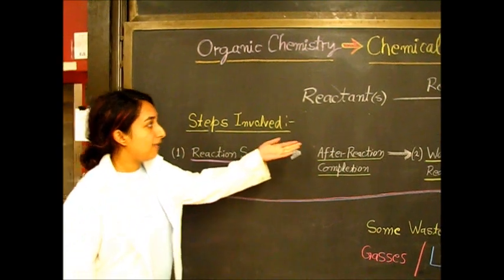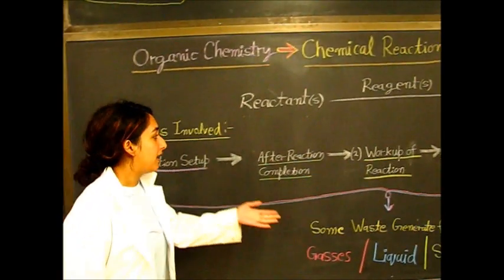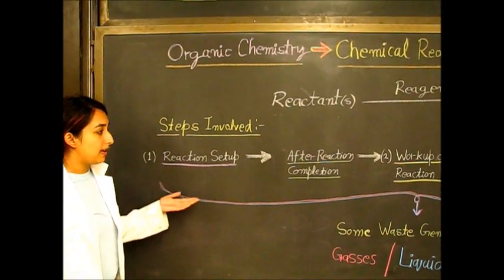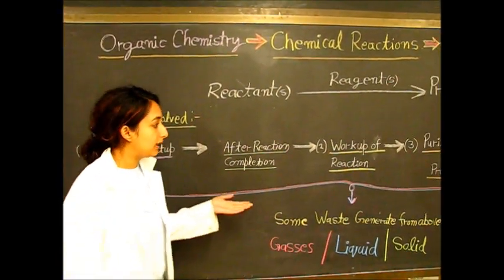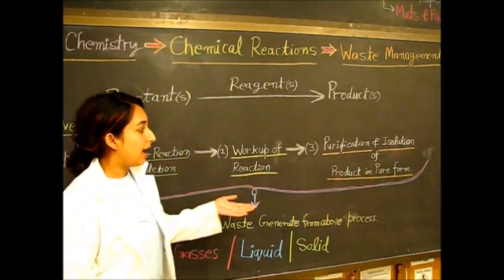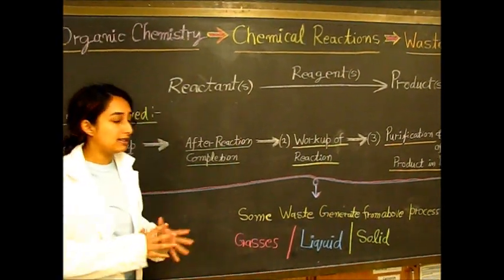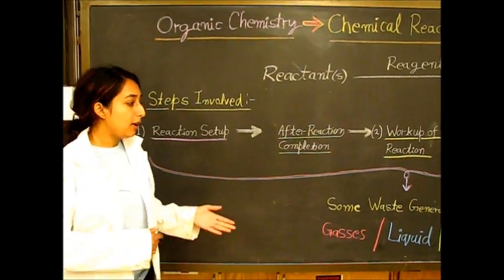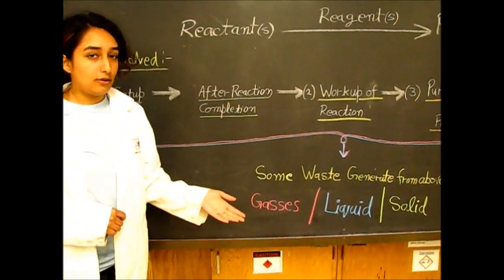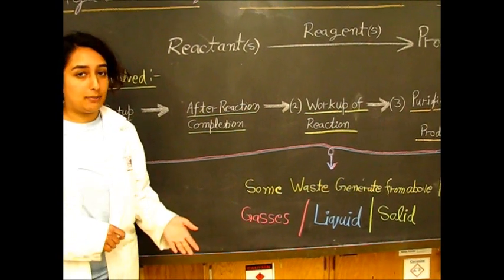You're going to have some reactants and reagents to make your product. The steps involved are the reaction setup, and then after the reaction is complete, you do a workup. After that workup, you get a purified and isolated product. Once this entire process is complete, we're going to have some waste generated. This can either be green or it could not be, and therefore we need to put it in the right place.